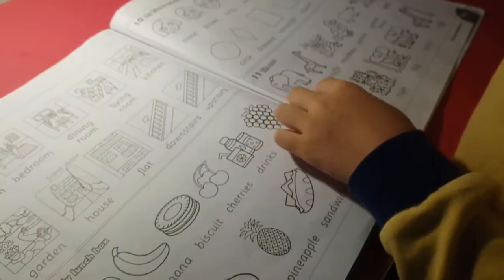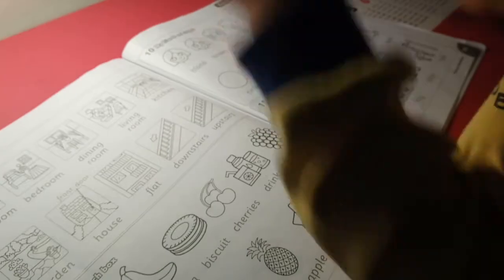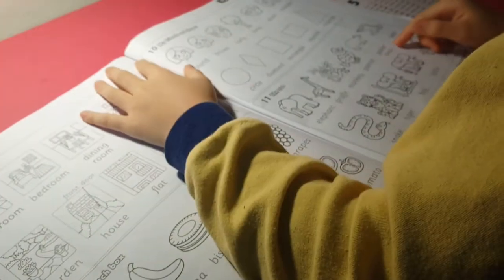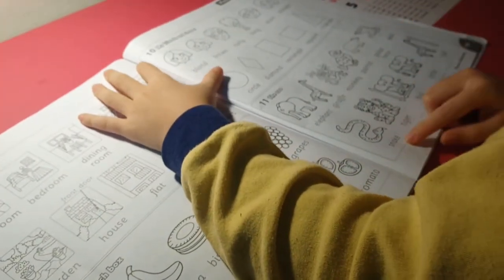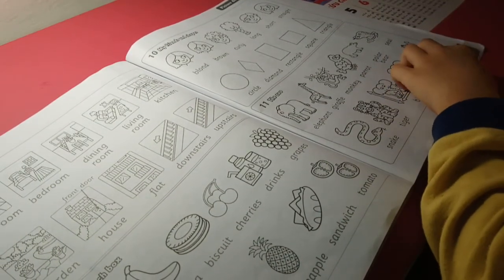The zoo. Elephants, giraffes, monkey, parrots, polar bear, seal, snake, tiger. Big, little, tall.